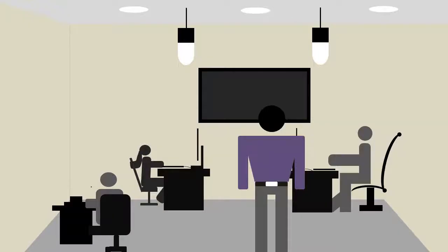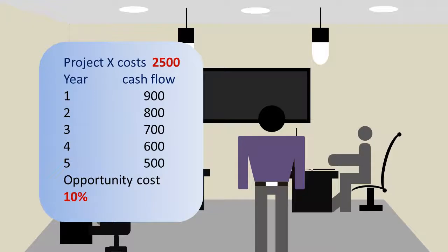Assume a company intends to take Project X, which costs $2,500 now, and is expected to generate year-end cash inflows of $900, $800, $700, $600, and $500 in years 1 through 5. The opportunity cost of capital is 10%. What is the net present value of Project X?